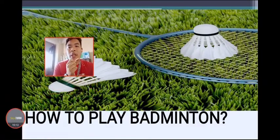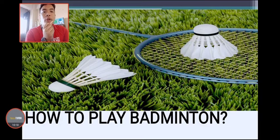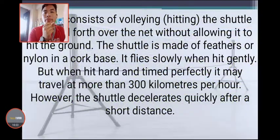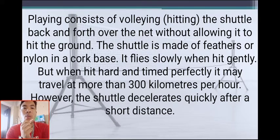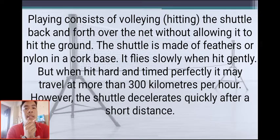Now, how to play badminton. Playing consists of rallying — hitting the shuttle back and forth over the net without allowing it to hit the ground. The shuttle, made of feathers or nylon with a cork base, flies slowly when hit gently.